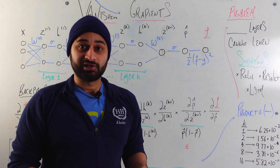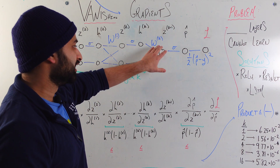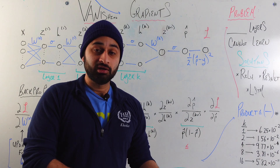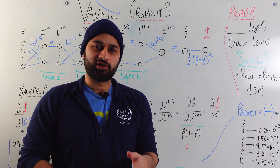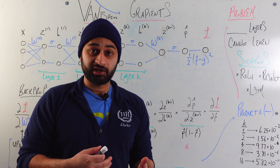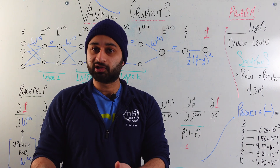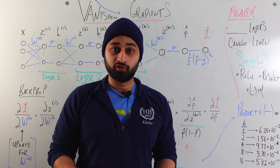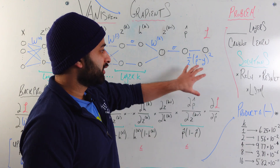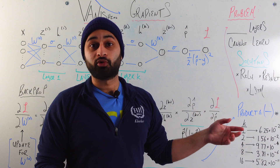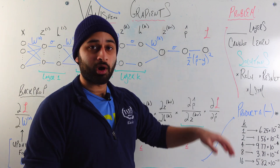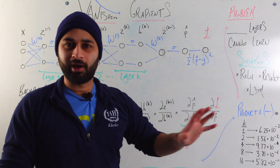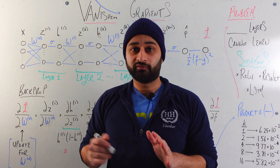The last things that happen in this network are that we apply a final linear transformation to get to z(k+1), then apply the activation function one more time to get p-hat, a predicted probability. We're assuming a binary classification problem today, but everything we're saying applies broadly. Once we have our predicted probability, we calculate a loss function — for us, just the squared loss: one-half times (p-hat minus y) squared, where y is the true label, 0 or 1. The one-half is there just to make the math easier. This is the general architecture of a neural network.